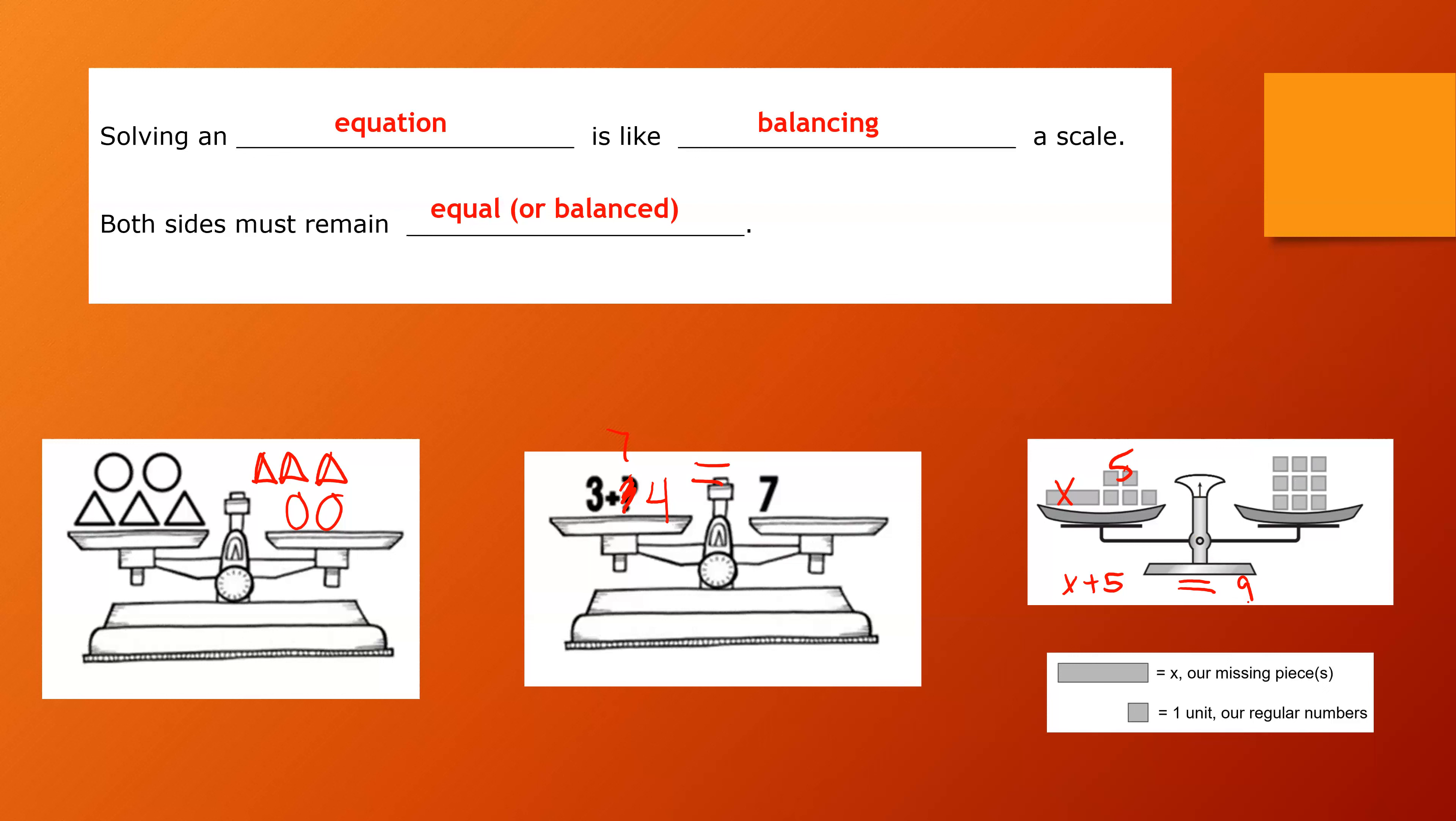And now if I want my scale to remain balanced, I need to put four more little squares to replace this X, this unknown long rectangle, and then my scale will be balanced. That's what we're looking at.